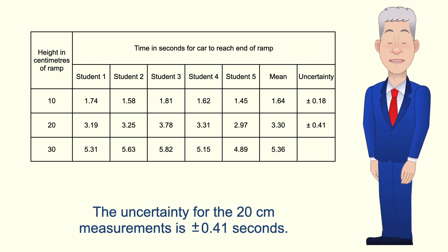Okay the uncertainty for the 20 centimeter measurements is plus or minus 0.41 seconds. And the uncertainty for the 30 centimeter measurements is plus or minus 0.47 seconds.